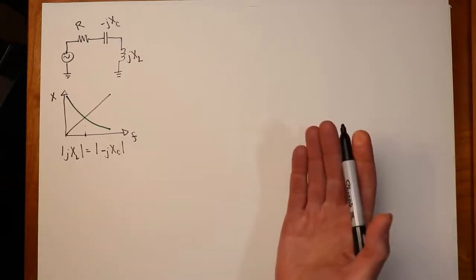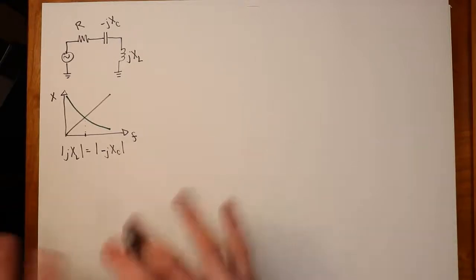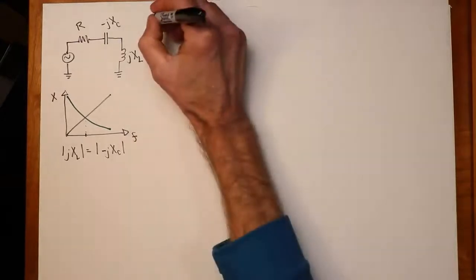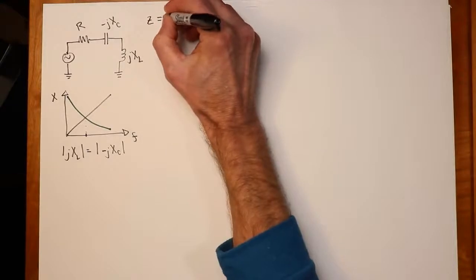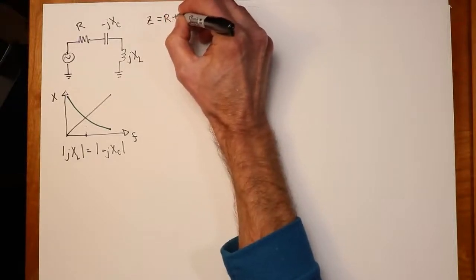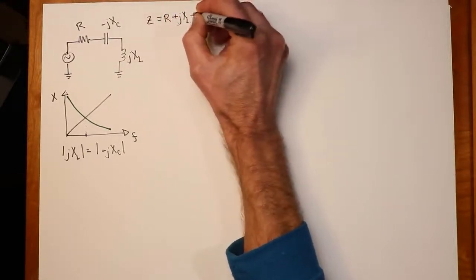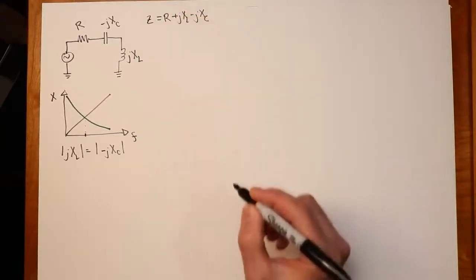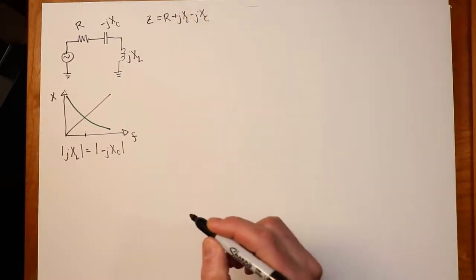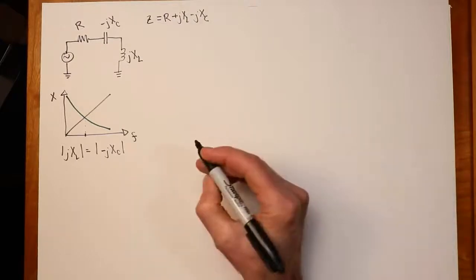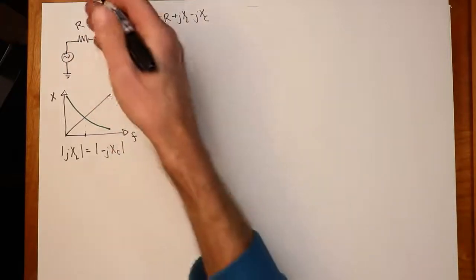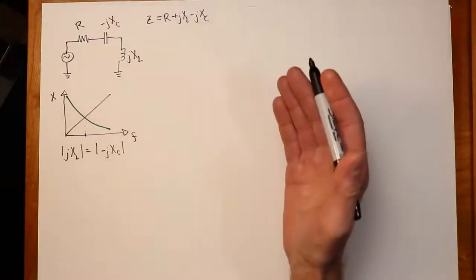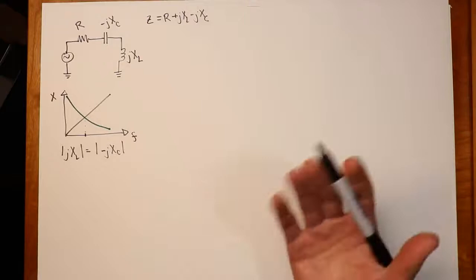That is what we refer to as resonance. The impedance of this whole system would be equal to r plus jXl minus jXc. So what happens when Xl and Xc are the same? Well, at that particular frequency, the impedance will just be r, because Xl and Xc will cancel. They are in opposite directions.